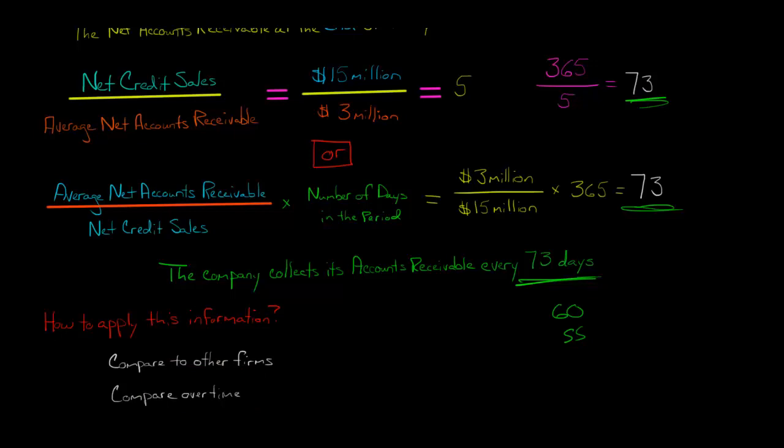We can also look at a trend over time within the same firm, just looking at Woofer and say, is our days sales outstanding going down over time? Is it increasing over time? In this case, if it was going up over time, we would see that as a bad thing.